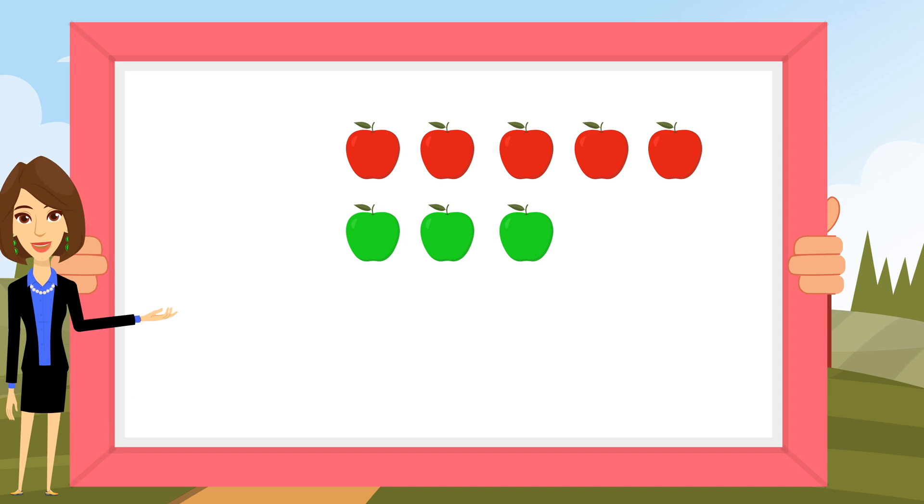Let's see how many apples are there all together. Up here we have one, two, three, four, five. Down there we have one, two, three.